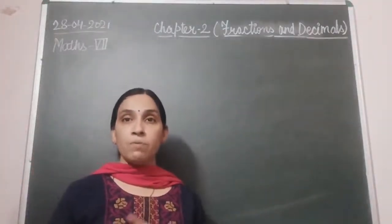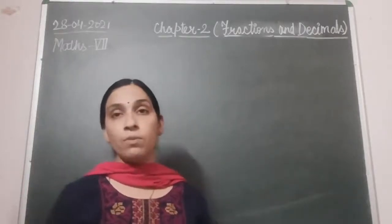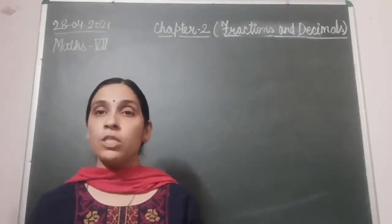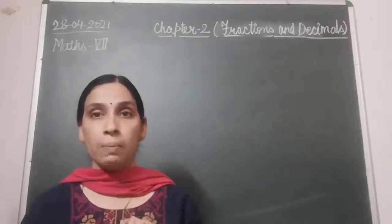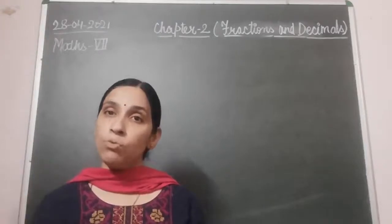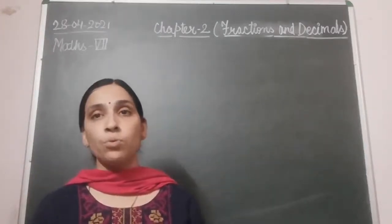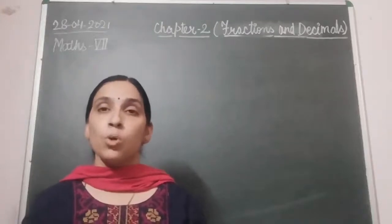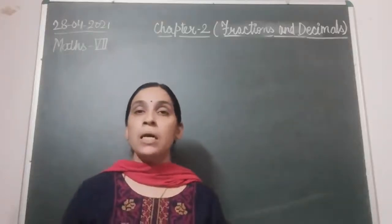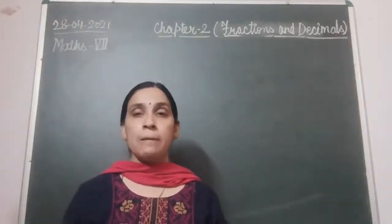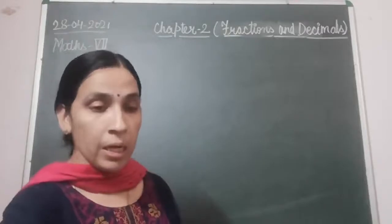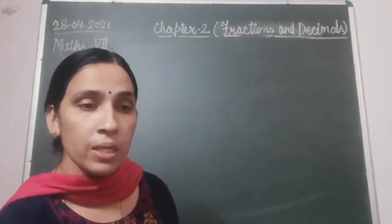After that we did the first three examples. The first example was finding equivalent fractions — when we multiply both the numerator and denominator of a fraction by the same whole number, we get an equivalent fraction. By multiplying with the same whole number, we can find many equivalent fractions. We finished up to example three.